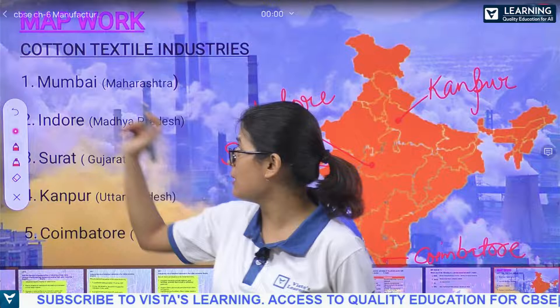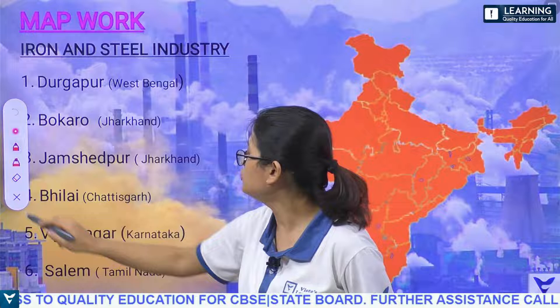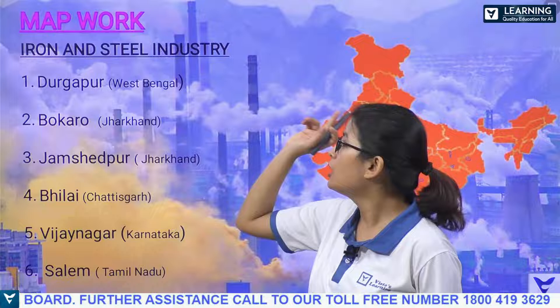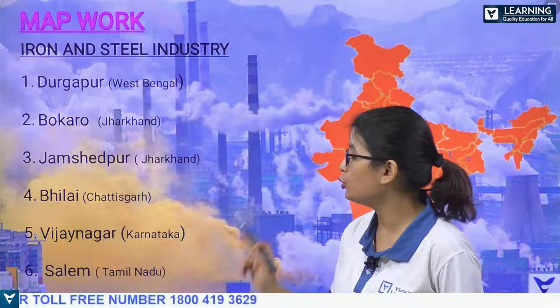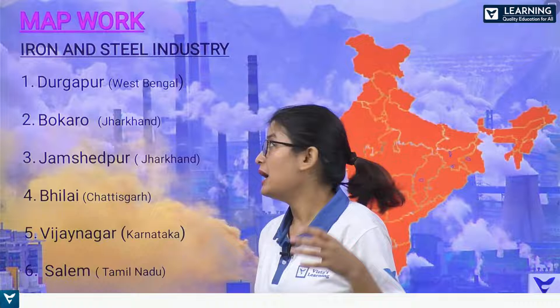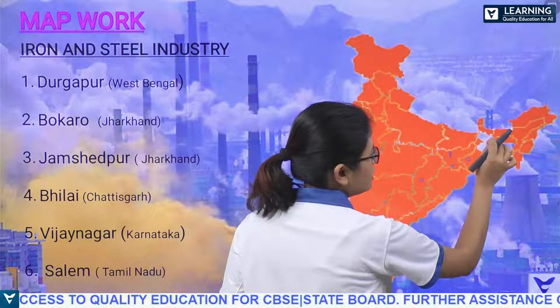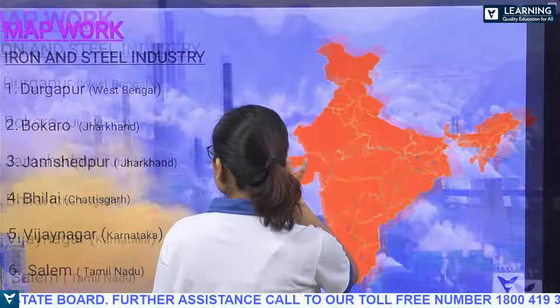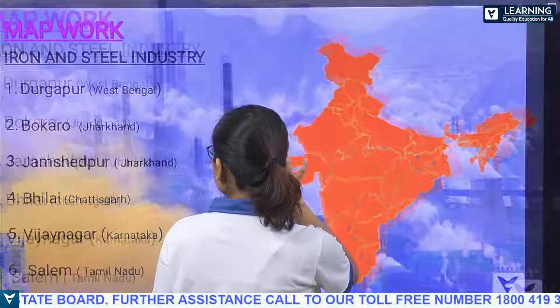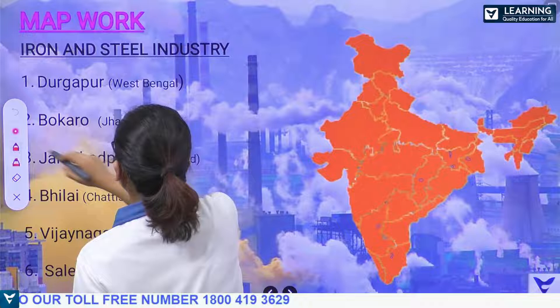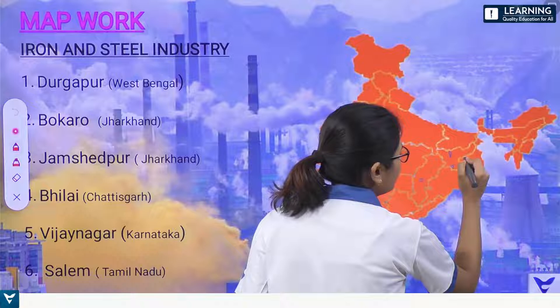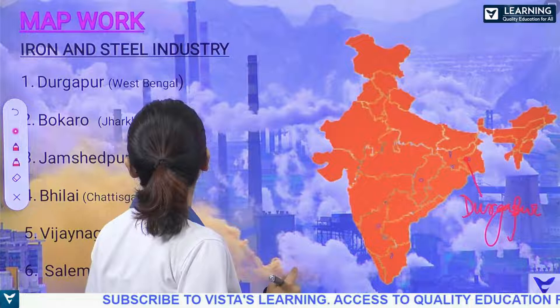Map work is very important for your exams. Now let's talk about iron and steel industry. Six iron and steel industry locations are given: Durgapur, Bokaro, Jamshedpur, Bhilai, Vijayanagar, and Salem. Jamshedpur was the place where iron and steel industry was first set up by the Tata Group. Durgapur is in West Bengal — the state where Durga is worshipped. We locate Durgapur in West Bengal, which has an iron and steel industry.